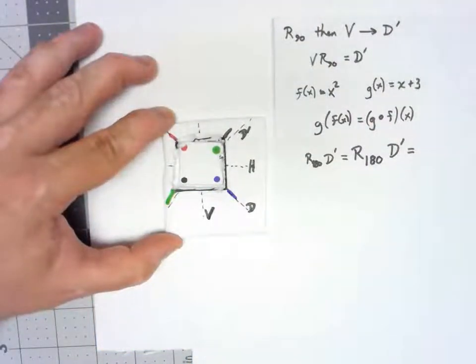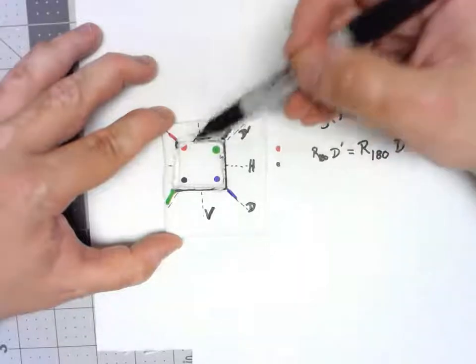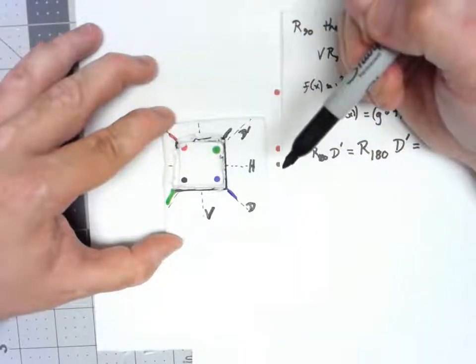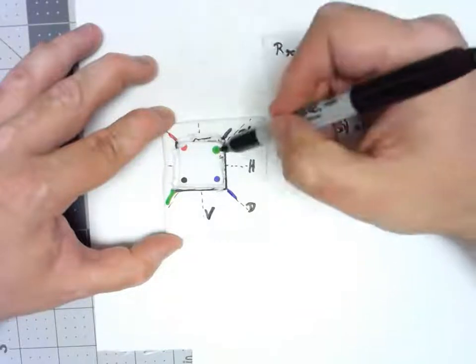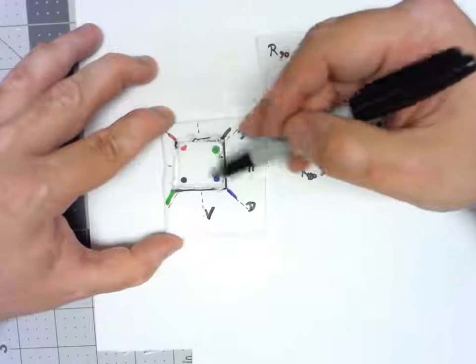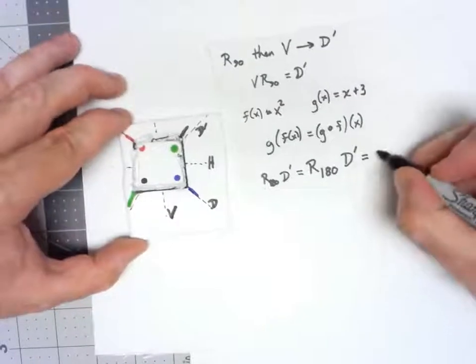What's this done? If we look at it compared to the starting positions, red and blue are in the same starting positions. The ones that have flipped are the black and the green. So, that's the same thing as flipping across the main diagonal.